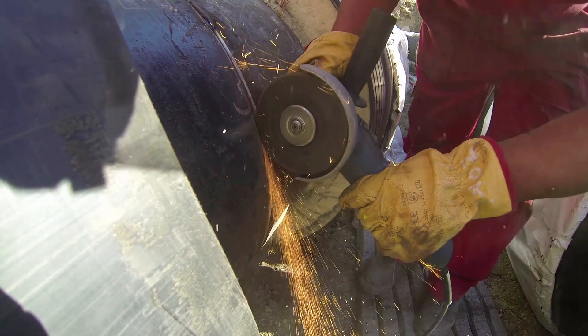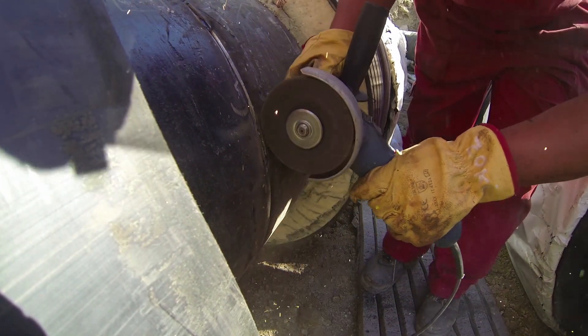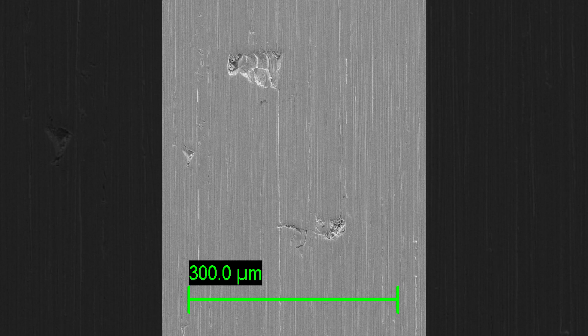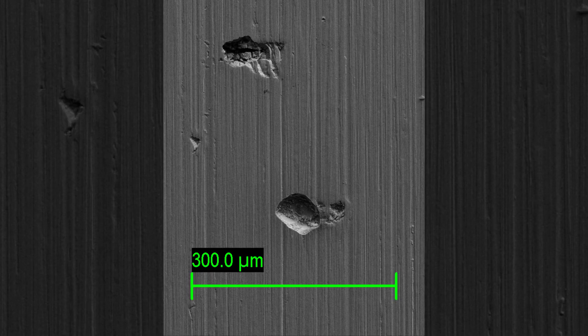Coarse grinding is commonly used to prepare pipeline surfaces for welding. Even surfaces that appear smooth to the naked eye contain surface defects and grinding grooves. Pitting corrosion tends to initiate at these defects and can lead to cracking of the material.